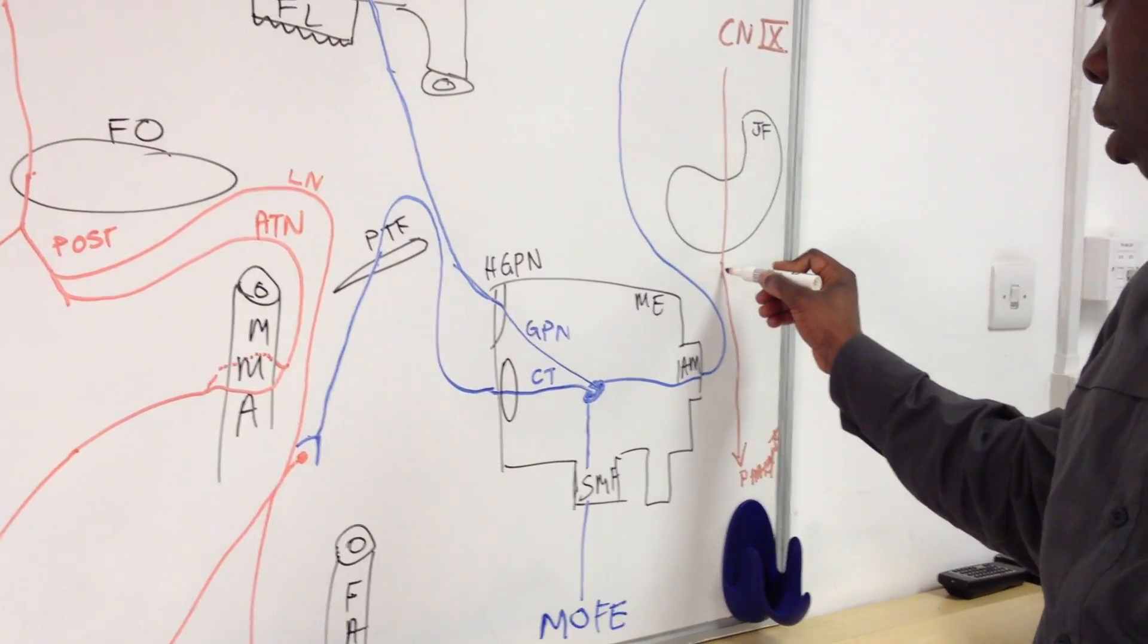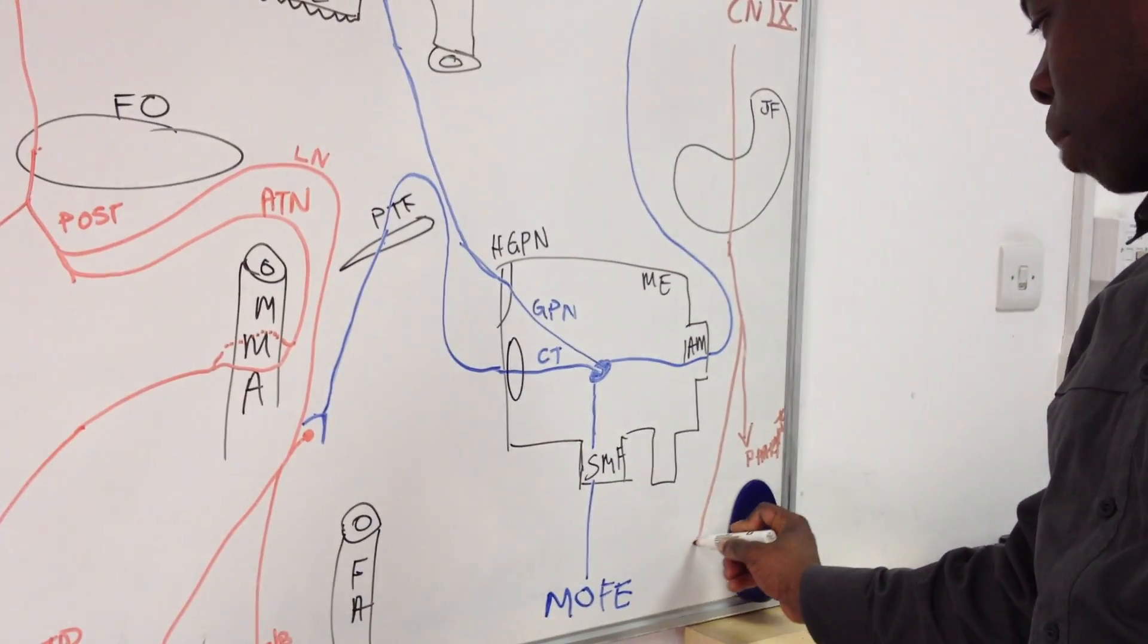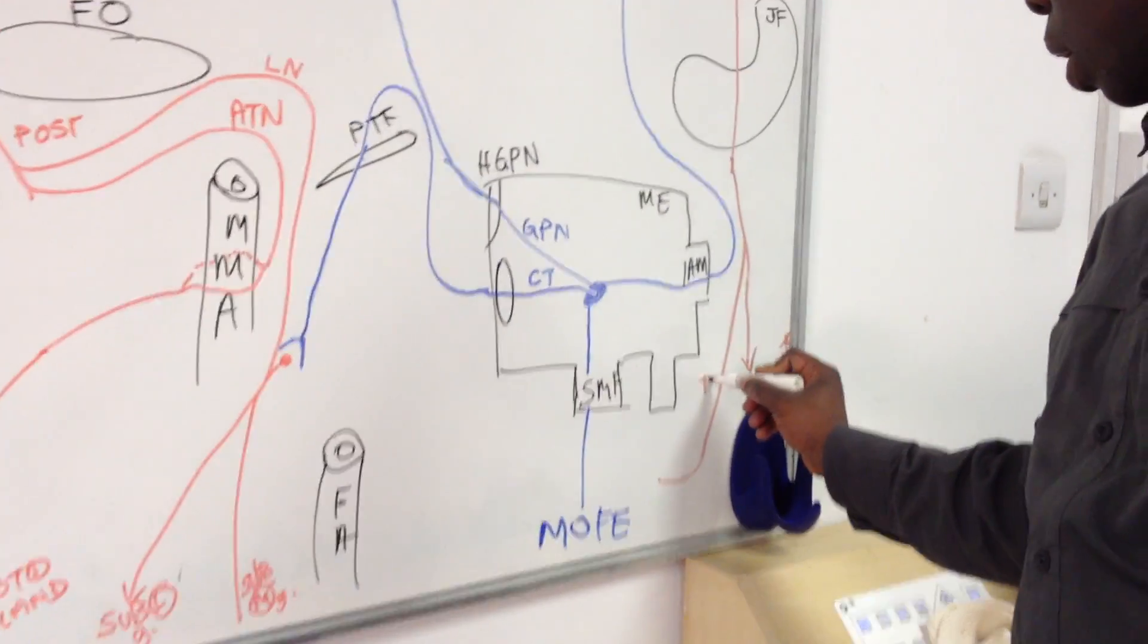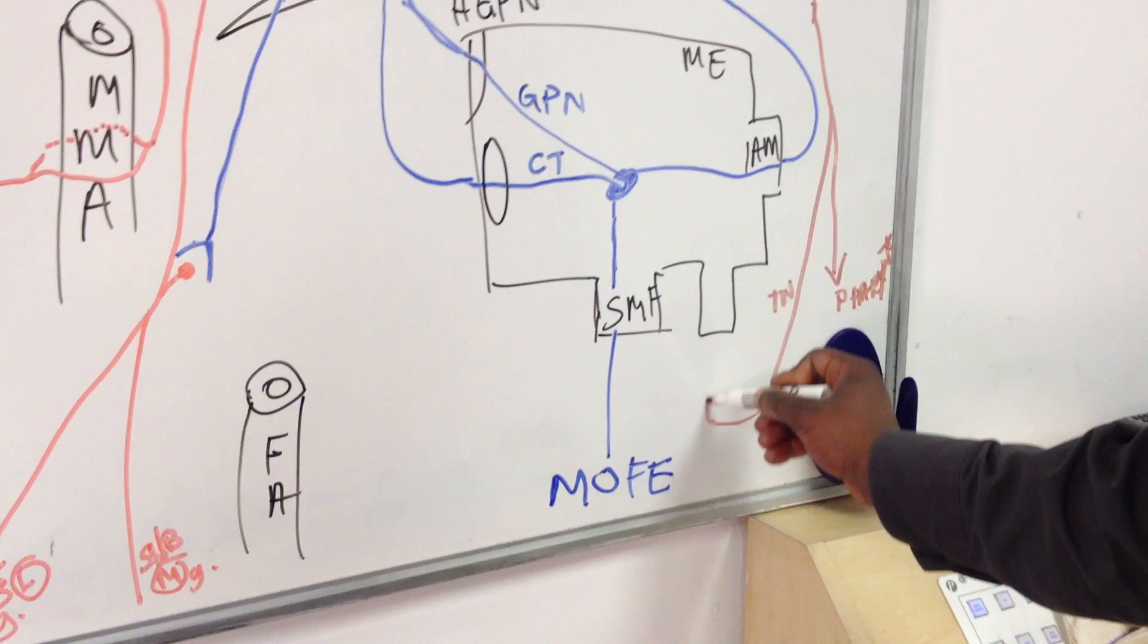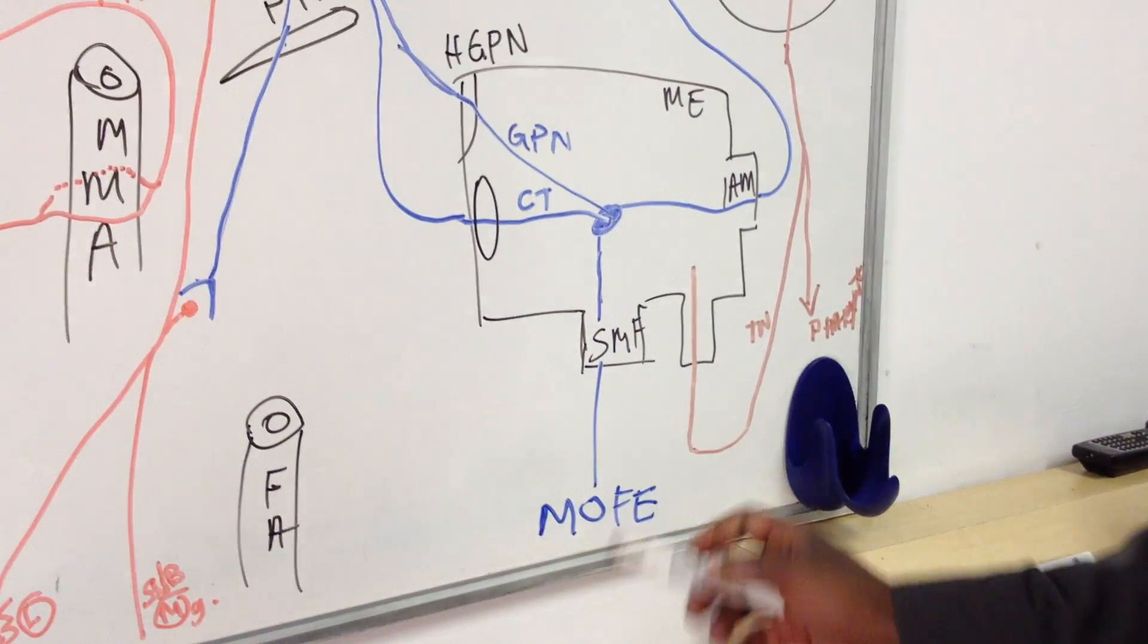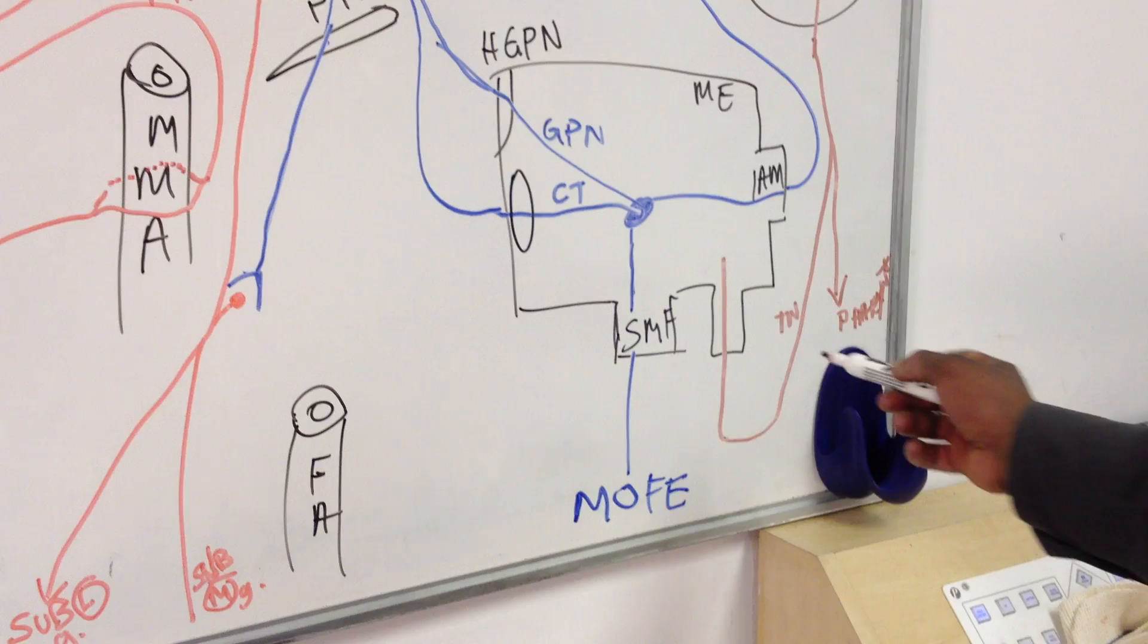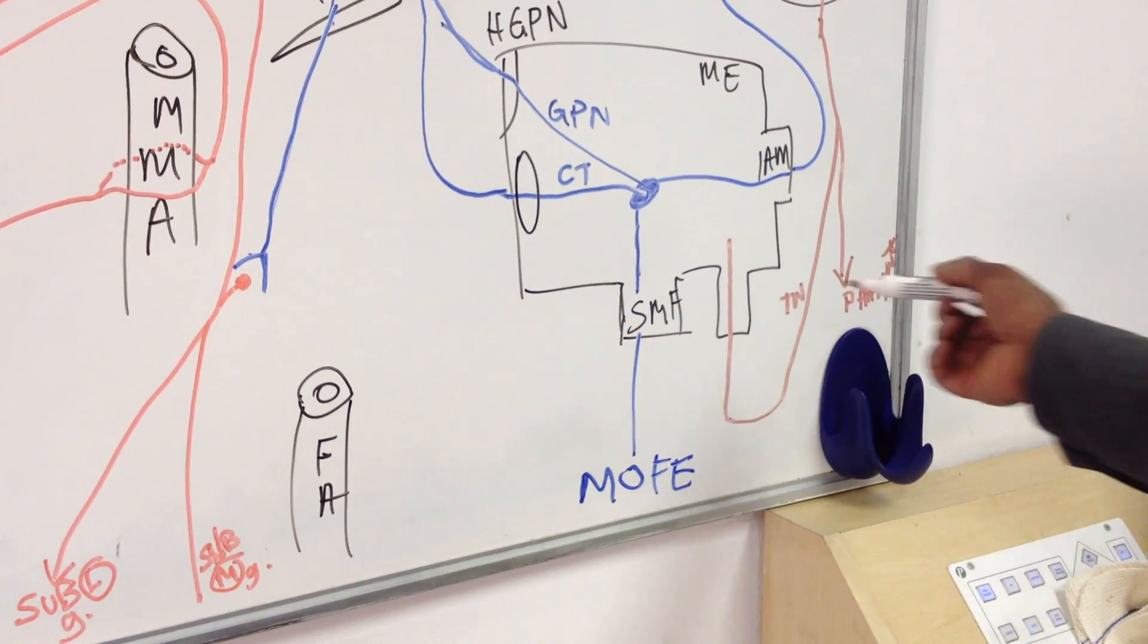Then it's going to form what's called the tympanic nerve, which is going to loop around and enter back into the middle ear through a small foramen which actually has no name.